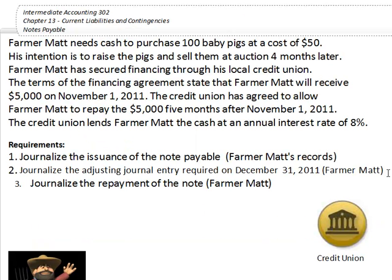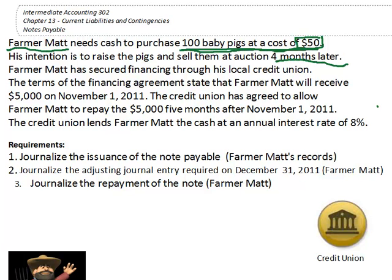Now let's walk through an example of how to record the initial issuance of a note payable. Let's say we have a farmer — Farmer Matt. Farmer Matt has no pigs currently and wants to get into the business of raising pigs. He has a pig pen big enough to hold 100 pigs, and he needs to buy baby pigs, raise them, and resell them at a cost of $50 each. He doesn't have the money, but it only takes four months to raise a pig to slaughtering weight — a pretty quick turnaround.